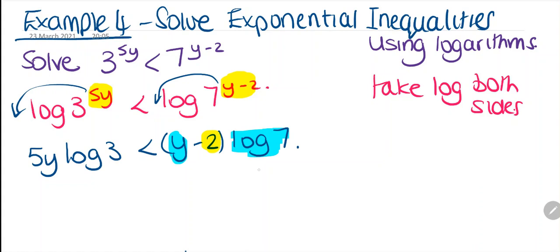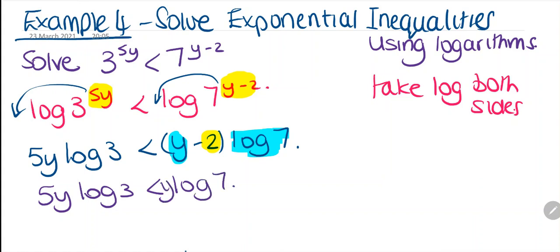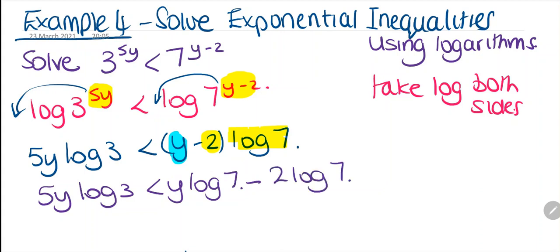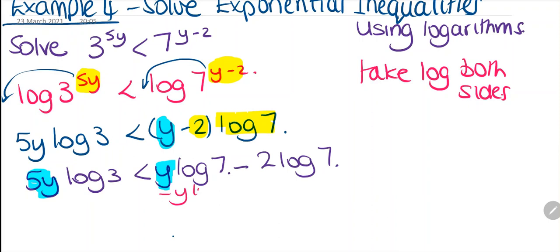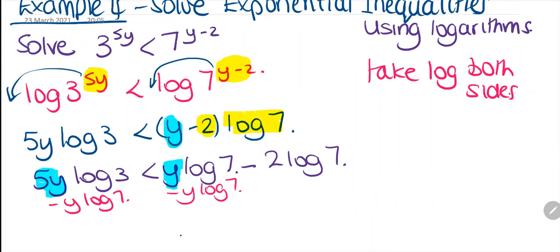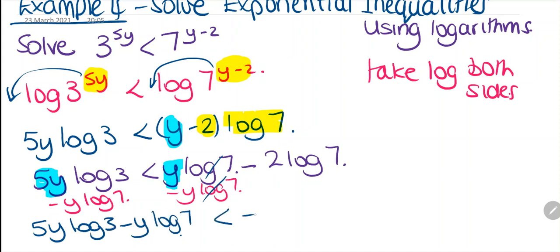And then minus 2 times log 7. So we have 5y log 3 is less than y log 7 minus 2 log 7. We need to move the y-terms together, so we minus y log 7 from both sides. These cancel, giving us 5y log 3 minus y log 7 is less than minus 2 log 7.